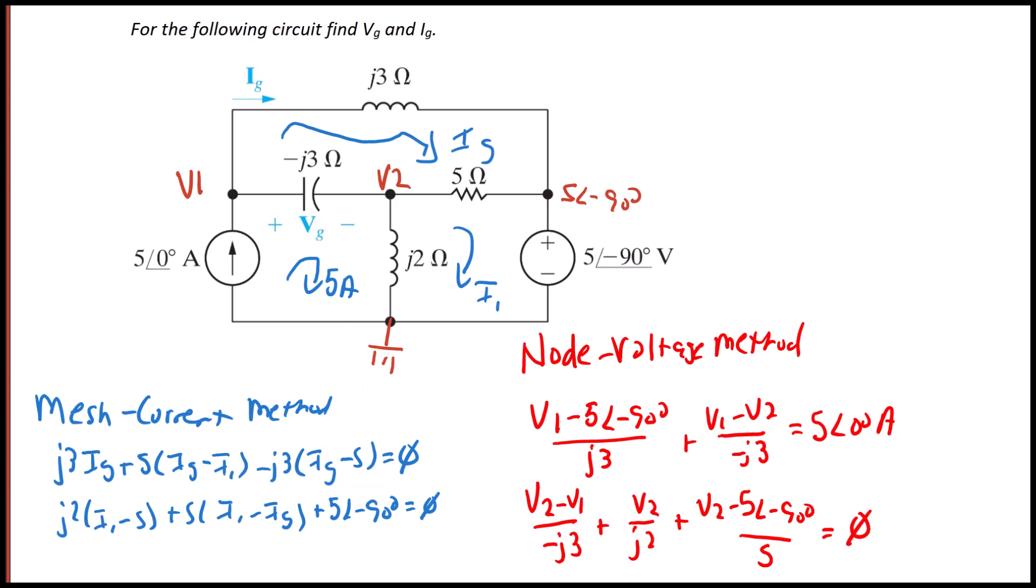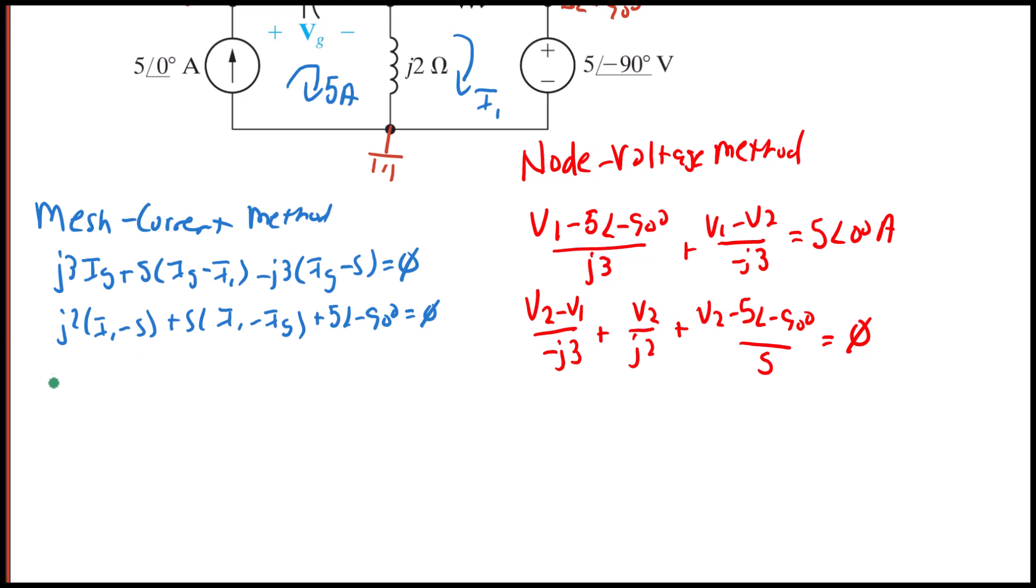And now it's time for us to solve. So solving the mesh current equations, we're going to get that I1 is equal to zero amps, and IG is equal to three with an angle of negative 90 degrees in amps.